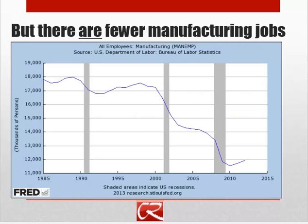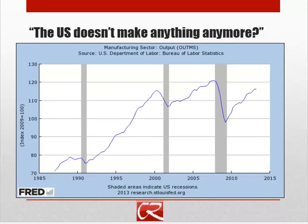If manufacturing output is stable or increasing while manufacturing employment is falling, the reason has to be that manufacturing productivity is growing. That's how we get stable or increasing manufacturing output from a declining manufacturing workforce. Fundamentally, it's that increase in productivity that has led to fewer jobs in the sector. The same thing happened historically with the farm sector — once upon a time, 80–90% of the population were farmers, but labor productivity in agriculture increased so much that only a small fraction of the workforce was needed to produce enough food for everyone. Nowadays, about 1–2% of the U.S. labor force is in agriculture.